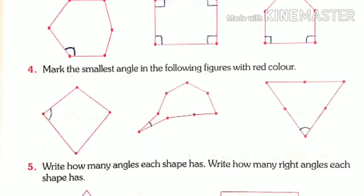Now we need to see question 4, where we have to mark the smallest angle. The topic says: mark the smallest angle in the following figures with red color. When we look at the first figure, it has four sides.